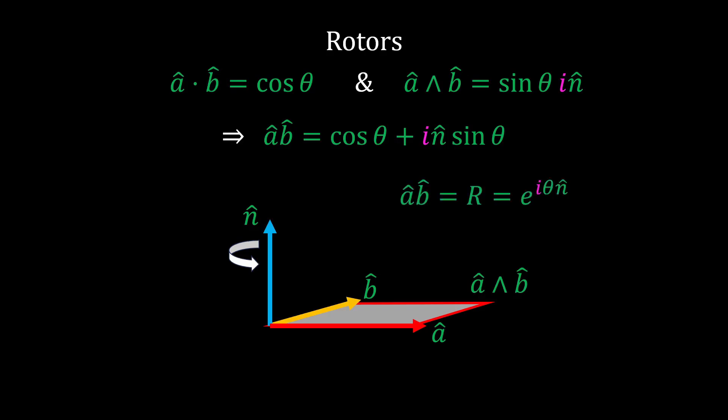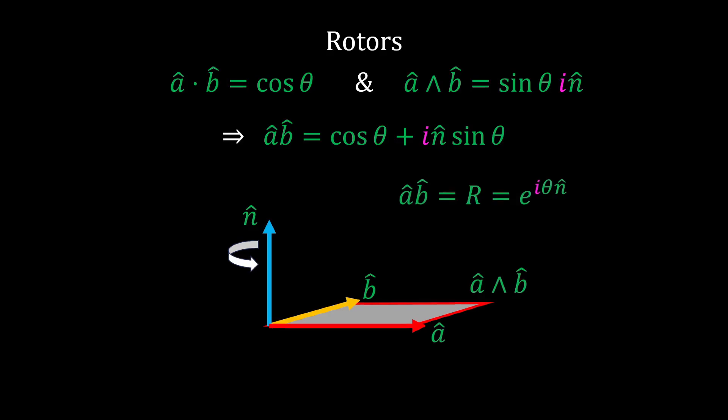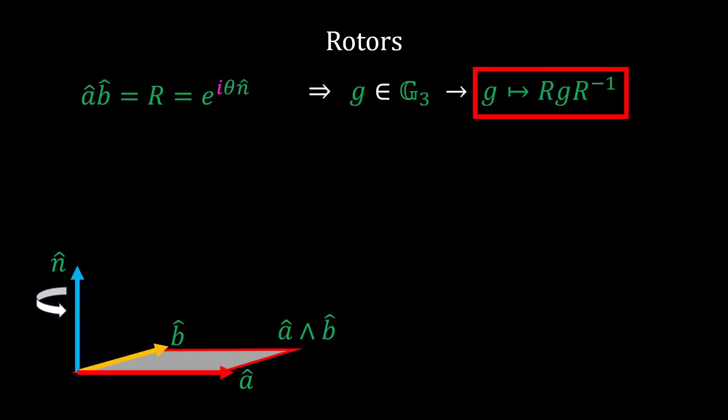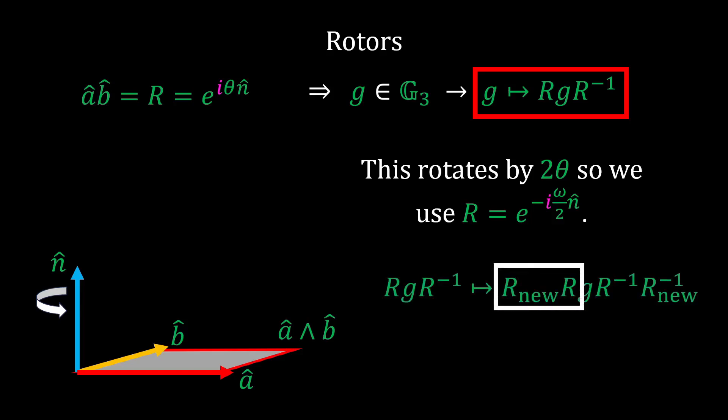Traditionally, we label this quantity r and call it a rotor. It's not the point of this video to prove this, but a rotor rotates any object in the algebra via what's called a sandwich product. This actually ends up rotating by twice the angle theta. So we usually perform a change of variables from theta to some angle omega over 2 and add a minus sign for convention. An important property of rotors is that they transform via one-sided transformations. That is, when an object is rotated once and then a second rotation is applied, it looks like the first rotor is transformed by multiplying the first rotor by the second rotor on the left-hand side.